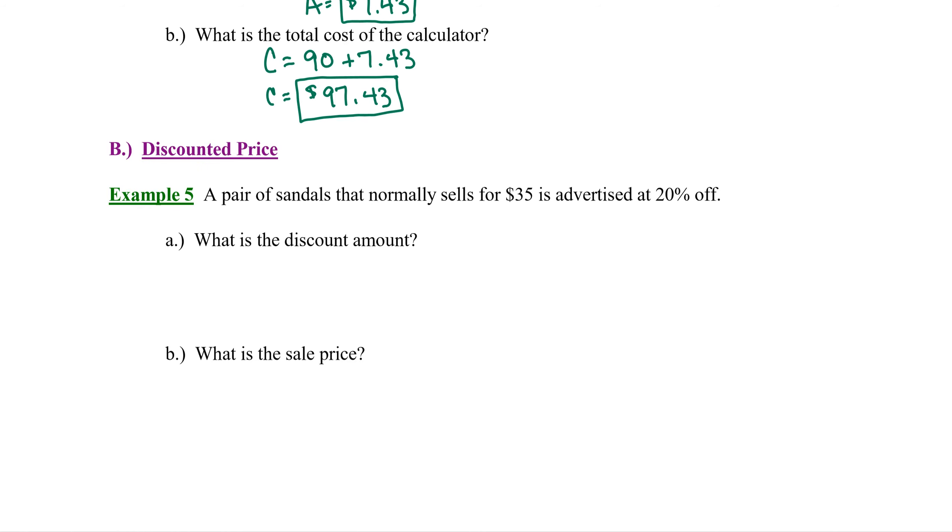Now y'all, my kiddos tease me that I will not spend more than $30 on shoes for myself. Let's see if this 20% discount brings those $35 sandals down into my frugal price range. We're still using our basic formula A = P × B. The percent here is 20% and the total price is $35.